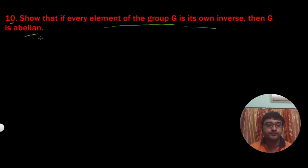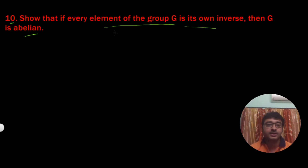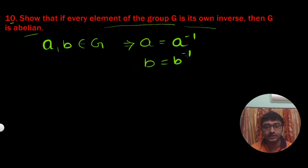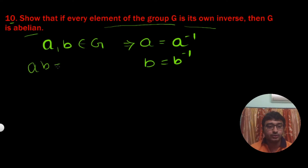It is given that if every element of the group G is its own inverse, then G is abelian. That means if A and B belong to G, this implies A equals A inverse and B equals B inverse. Using these two, we need to show that for every A and B in G, AB equals BA.